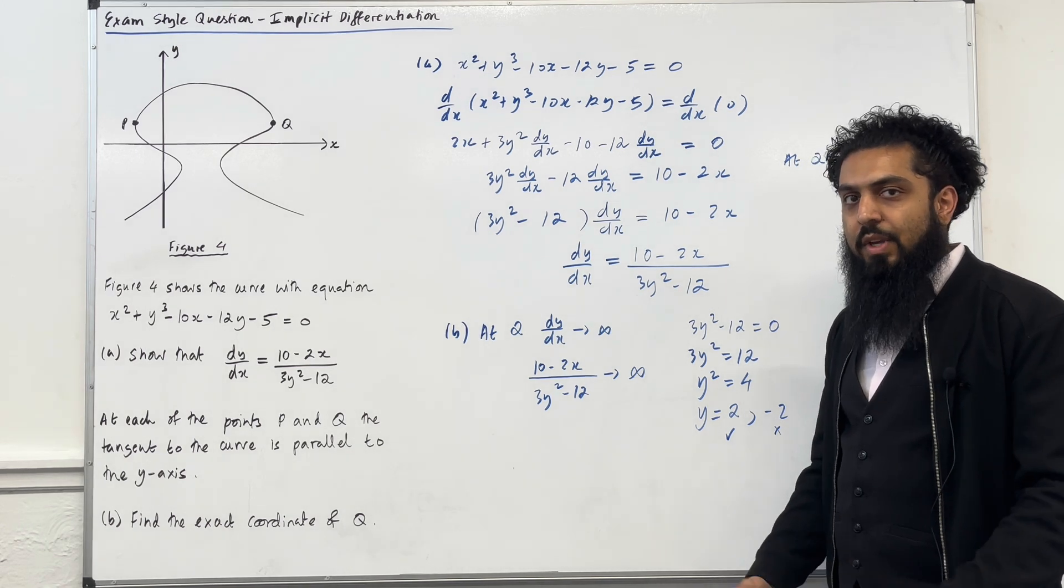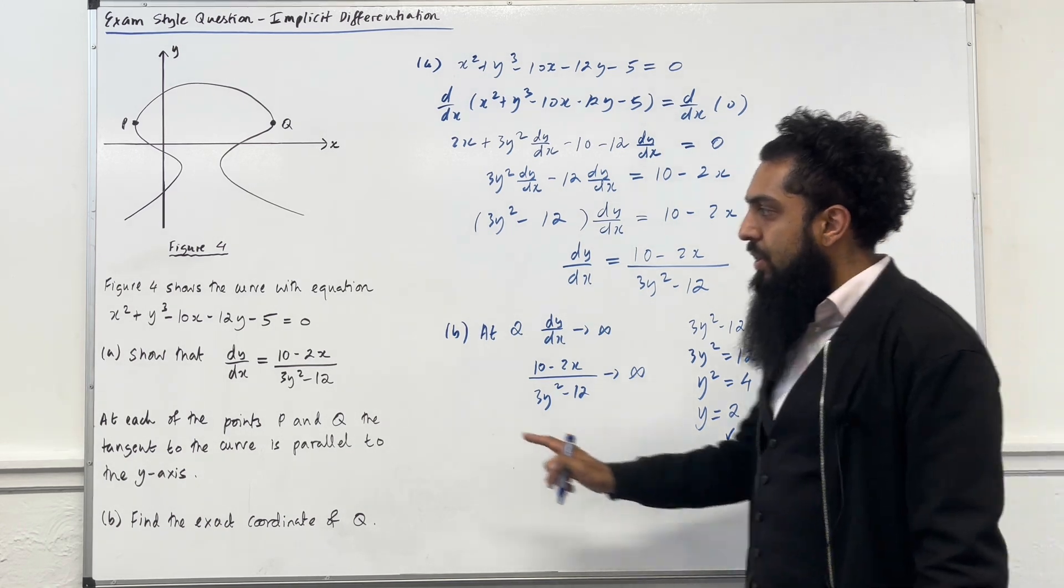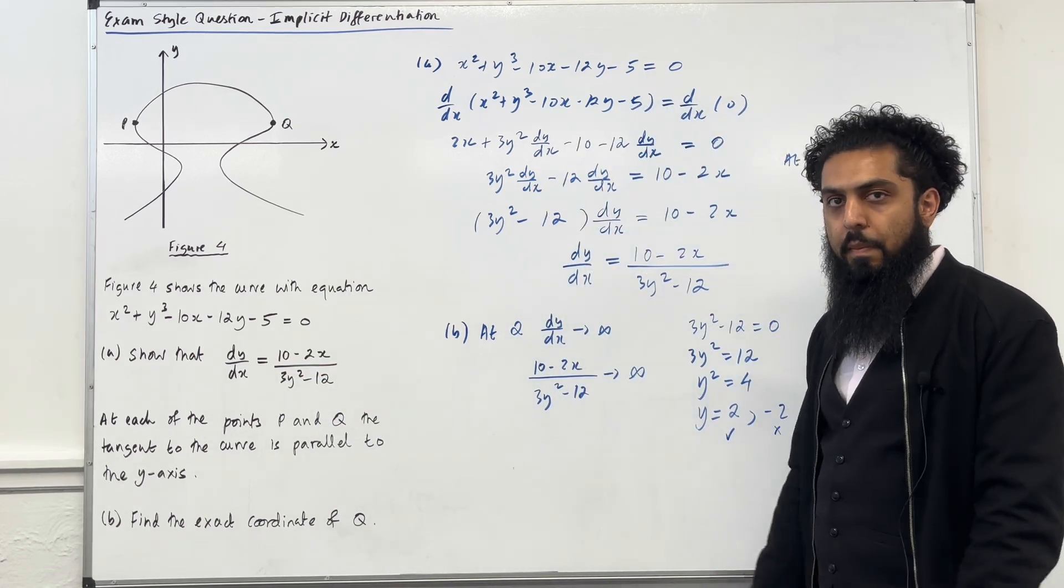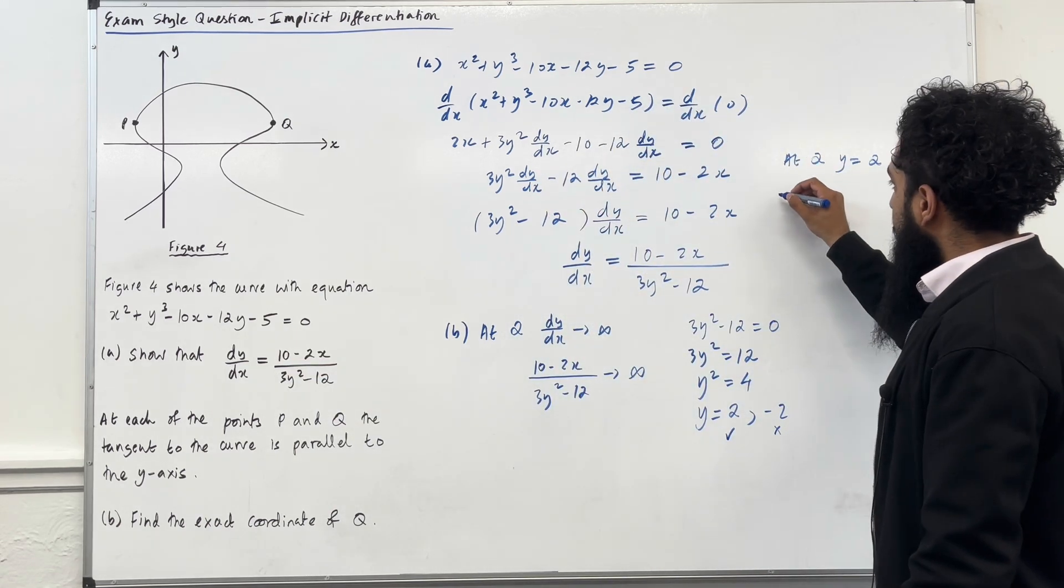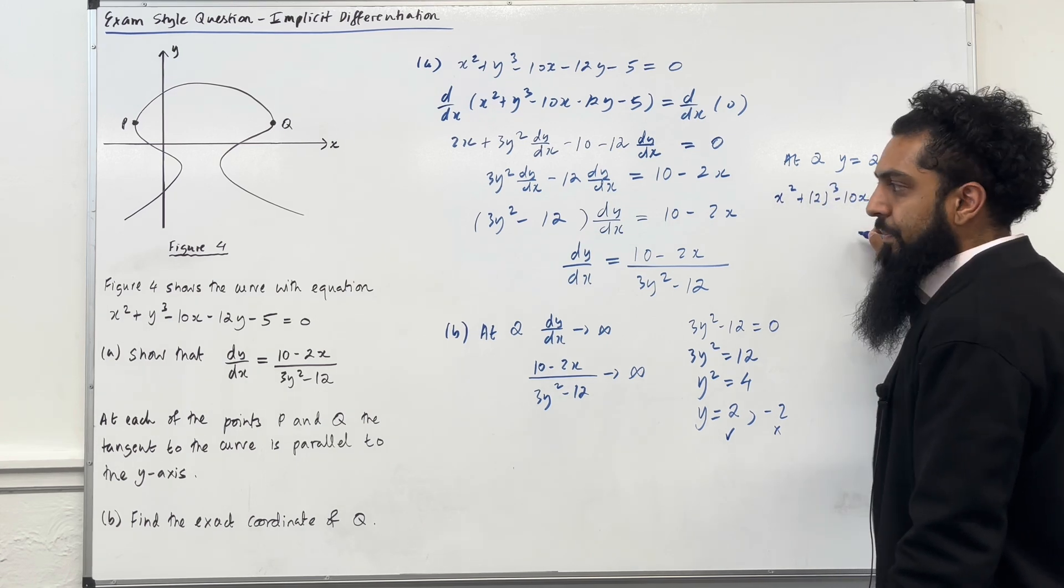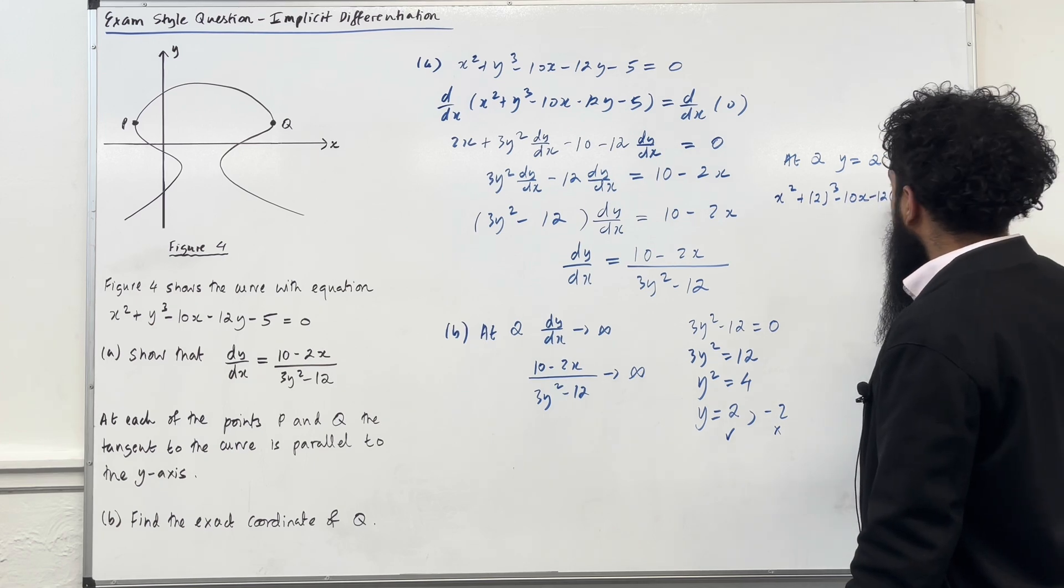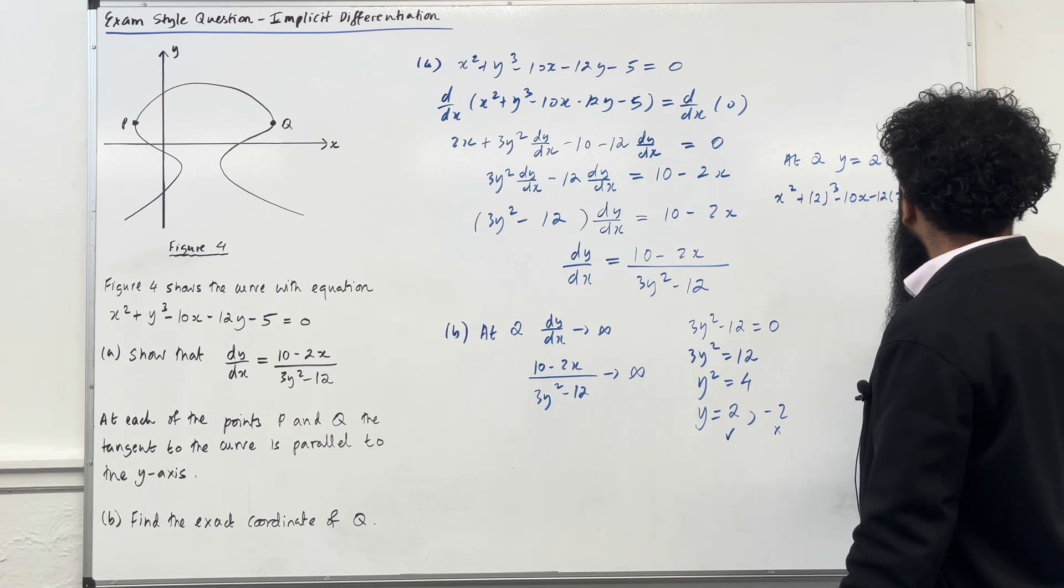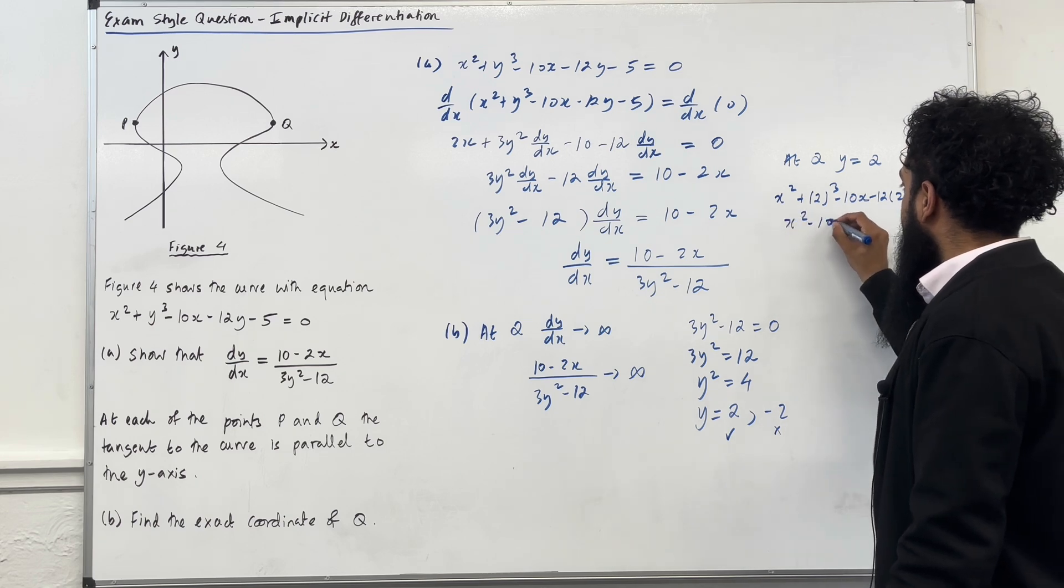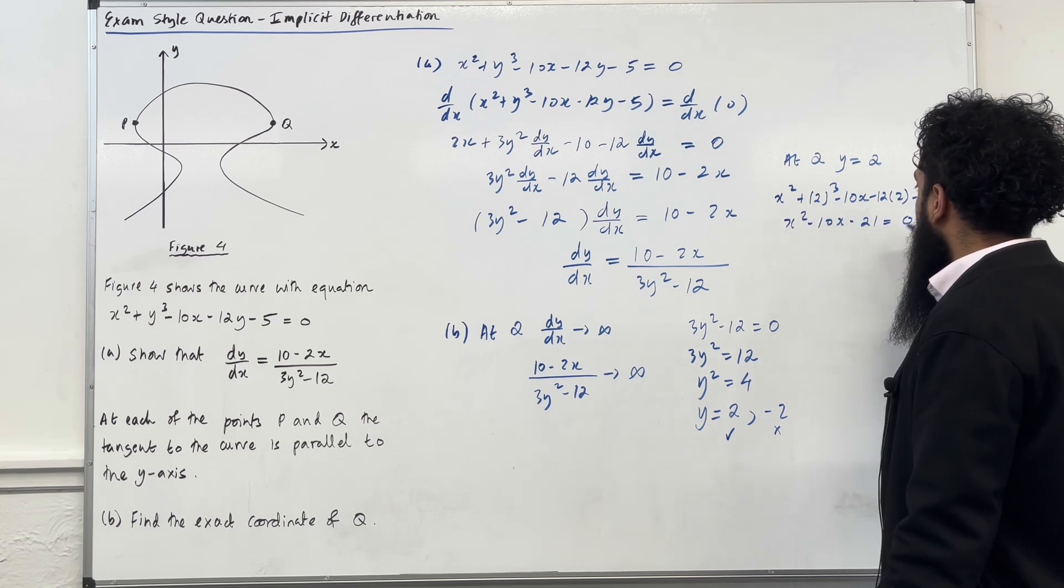Now I can substitute y equal 2 back into the original implicit equation to work out the x-coordinate. So I've got x squared plus 2 cubed minus 10x minus 12 multiplied by 2 minus 5 equal to 0. This simplifies to x squared minus 10x minus 21 equal to 0.